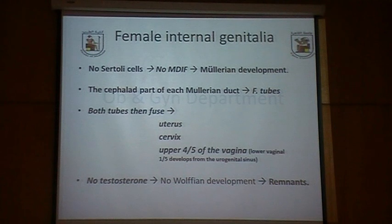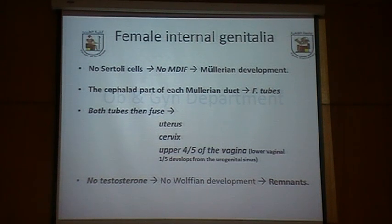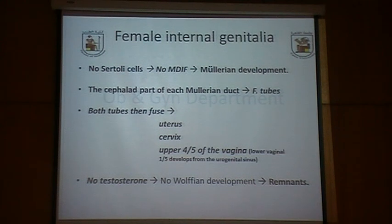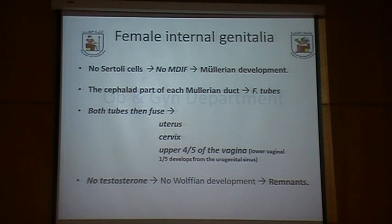Female internal genitalia development is a passive process. Without Sertoli cells, there is no Müllerian duct inhibiting factor, allowing the Müllerian ducts to develop. Without testosterone from Leydig cells, the Wolffian ducts will not develop and will atrophy, resulting in remnants. The upper part of each Müllerian duct forms the fallopian tube and remains unfused, while the lower parts fuse to form the uterus, cervix, and upper four-fifths of the vagina. The lower one-fifth of the vagina develops from the urogenital sinus.